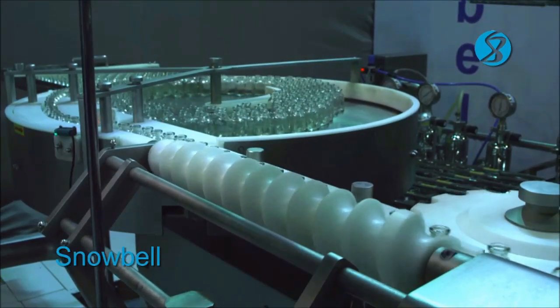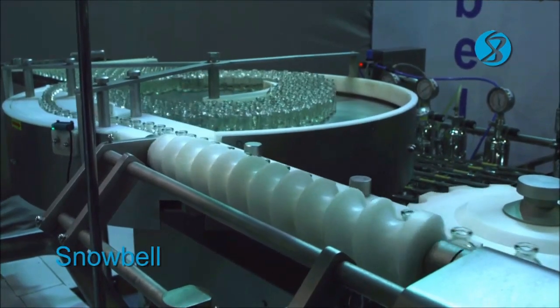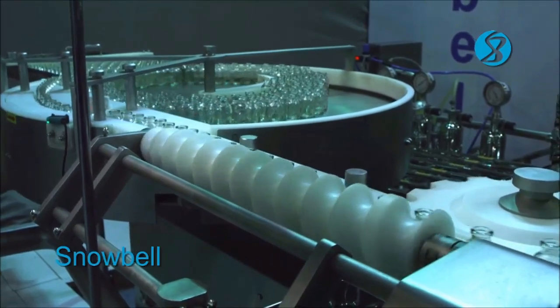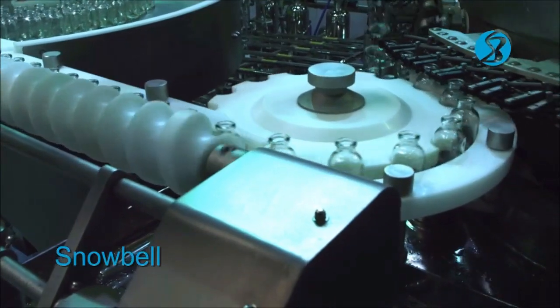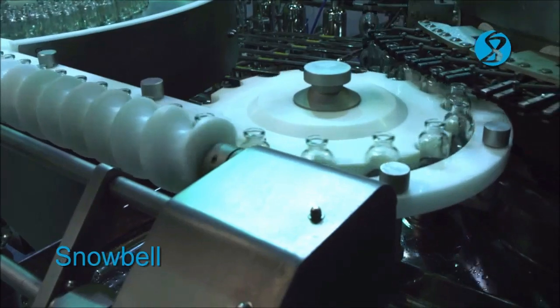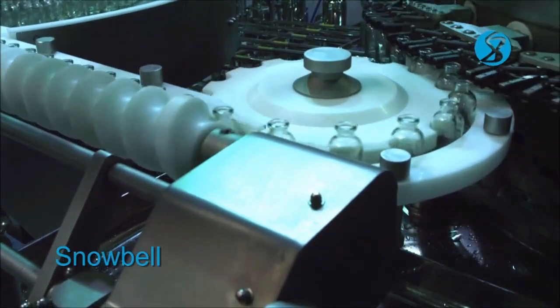The vials, singled out, are then transferred to the in-feed star wheel and delivered to a revolving conveying system consisting of 60 equally spaced V-grippers mounted on its circumference.